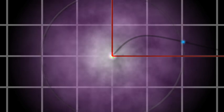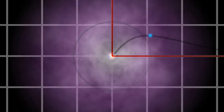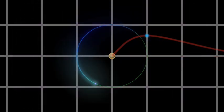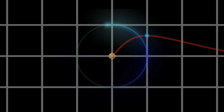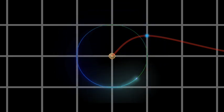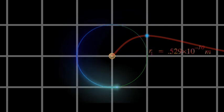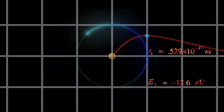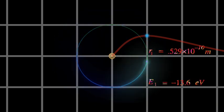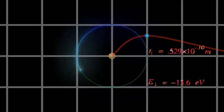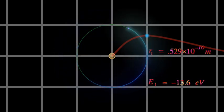Amazingly, the radius where the probability reaches a maximum is precisely equal to the radius of the first allowed orbit of Niels Bohr's model of the hydrogen atom. And its energy is exactly equal to the energy of an electron in this orbit in the Bohr atom.